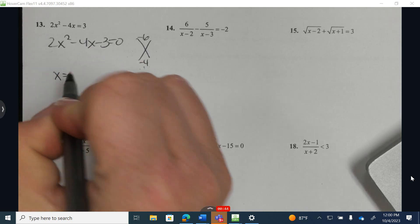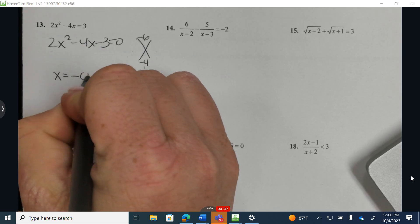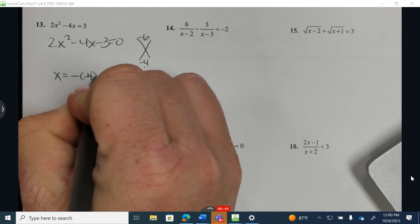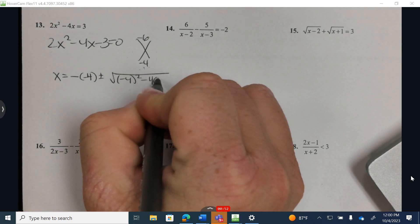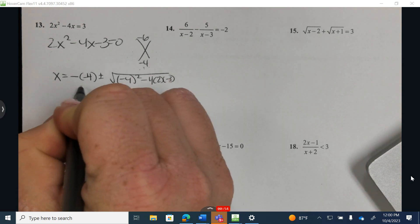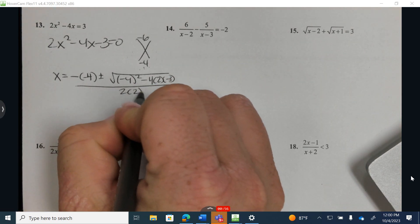So I have X equals negative B, so negative 4, plus or minus negative 4 squared, minus 4AC, all over 2 times A. Okay.